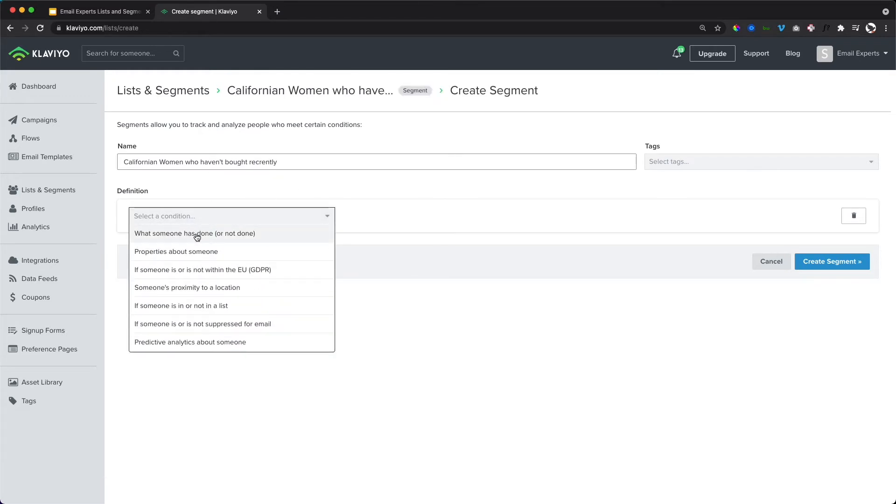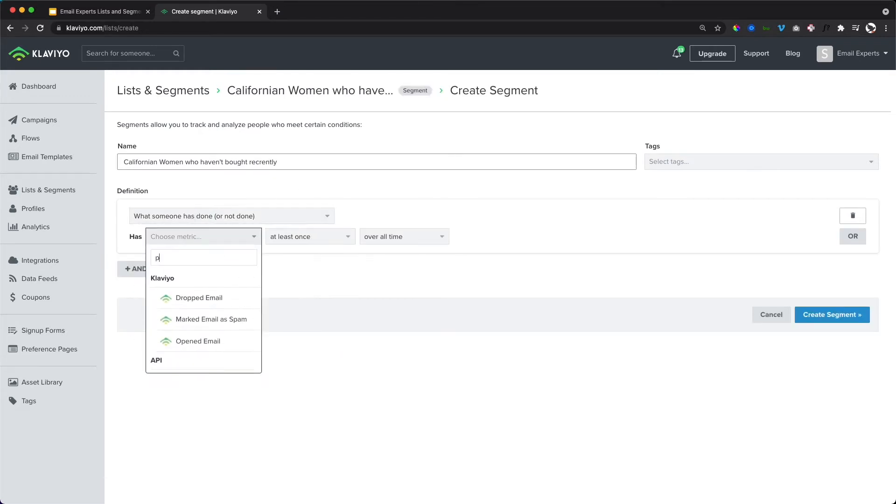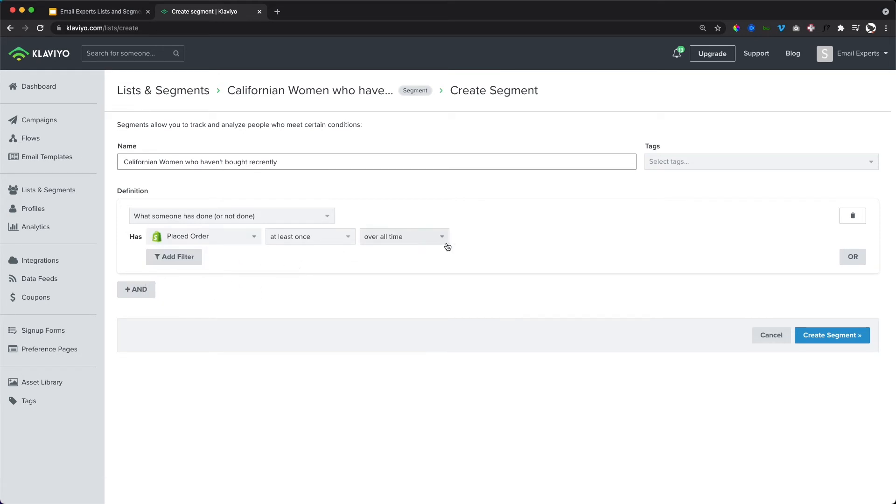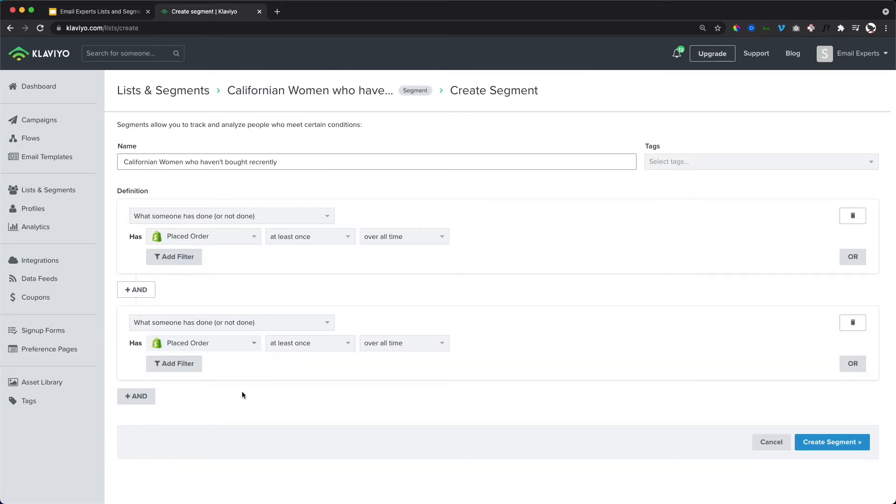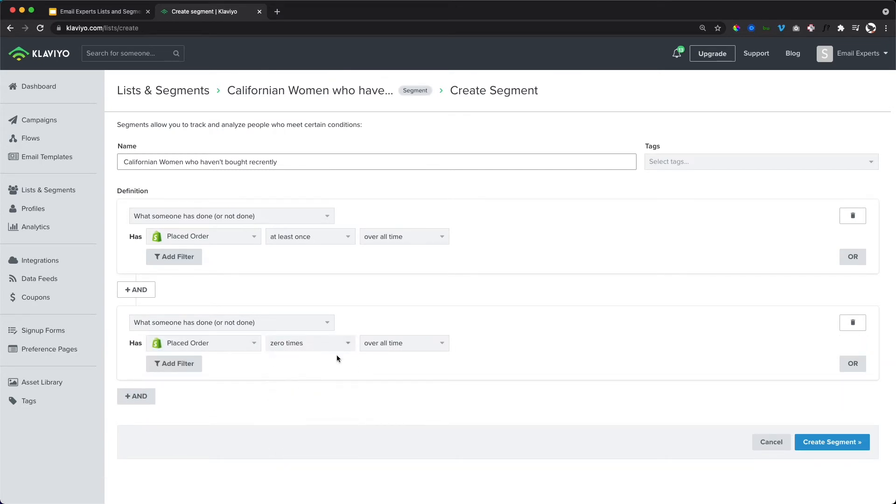So we want to say something that they have or have not done. So we want to say that they've placed an order at least once over all time, but they haven't placed an order recently. So they've placed an order zero times in the last, let's say 60 days.